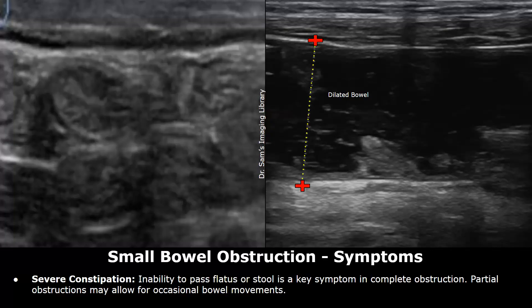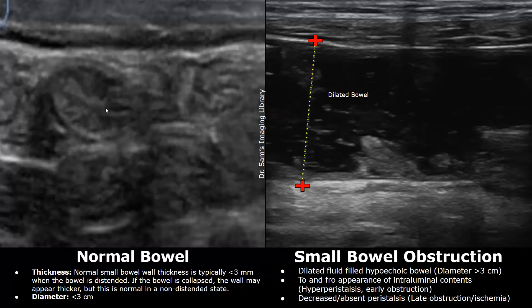Many patients with small bowel obstruction are unable to pass stool. Partial obstruction may allow for occasional bowel movements. We will now compare the normal image of the bowel with small bowel obstruction. This is the normal bowel — it appears collapsed, and you can see distinct layers. The normal small bowel wall thickness is usually less than three millimeters.